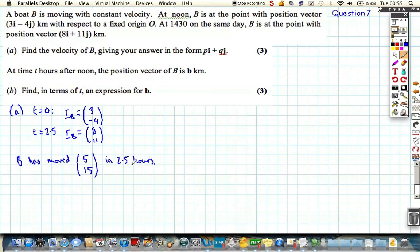So, we know that if we divide this by 2.5 every hour, the velocity of B, every single hour, it would have moved 2, 6, or 2i and 6j kilometres per hour. So, that's its velocity, and it's moving in this direction.